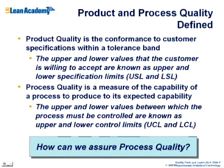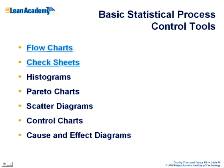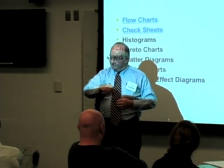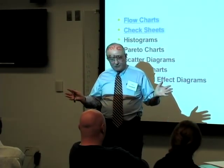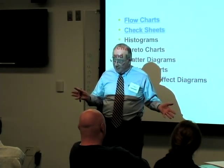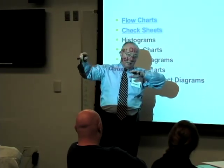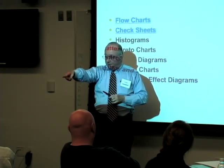How can we assure process quality? There's a series of tools we use in the quality business. Flow charts — we take a flow chart and list all the processes to build our part. We used to joke: mill, drill, tap, and scrap — meaning we mill it, drill it, tap it, and then because we didn't make spec, we scrap it. A flow chart is exactly what we did when talking about building airplanes.